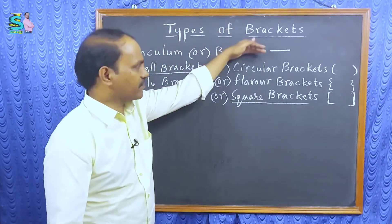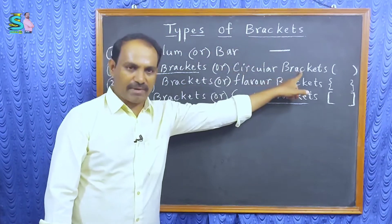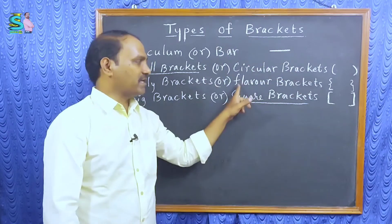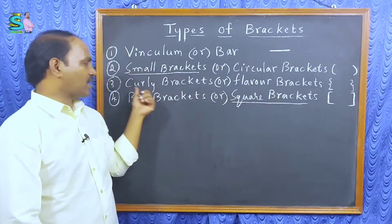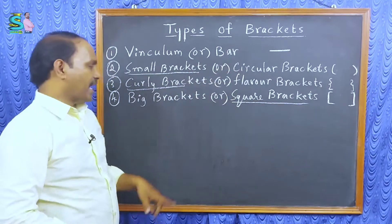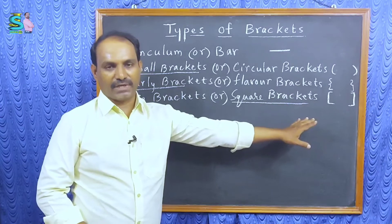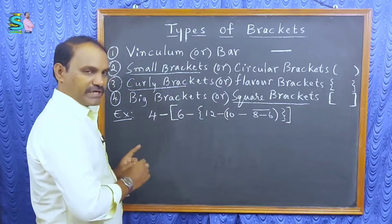First two, smallest bracket is vinculum. Next one is circular brackets. Next brackets, flower brackets or curly brackets. Next one is square brackets. Understood? One example here. What is the question?